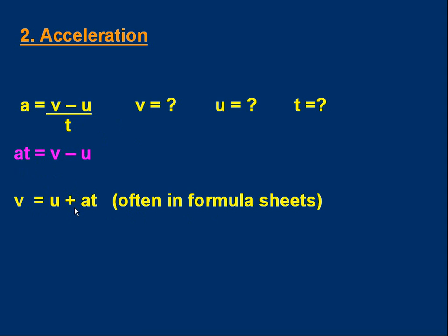If we want to get u, we can rearrange this equation. Take at from both sides. That means we've got v minus at on the left and u by itself on the right. So u is v minus at. To get time, go back to the top equation. Divide both sides by a. Divide the left side by a, leaves t by itself. Divide the right side by a. You get v minus u over a. So that's the equation for the time.